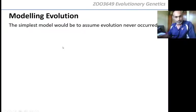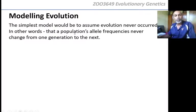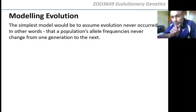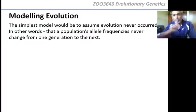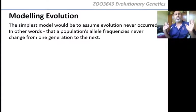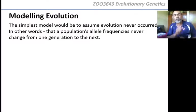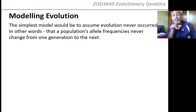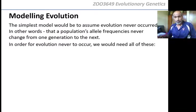Evolution never occurred — in other words, what does that mean based on what you already know? That means that the allele frequency in a population will never change from one generation to the next. That is what you are saying when you say there's no evolution. If there is a change, something is causing the frequency to change, and that is evolution. This is why we all laugh when people say there's no evolution — it's ridiculously simple.